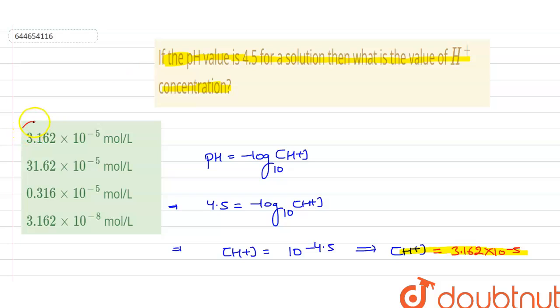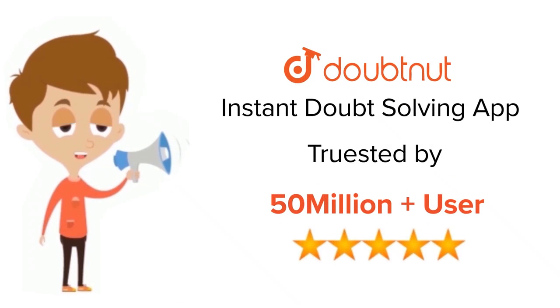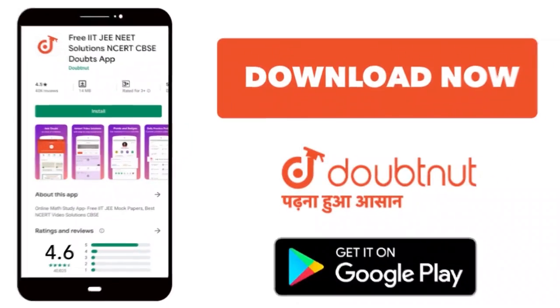from here we can say that it is exactly matching with our first option, so our first option is correct. I hope you got my point. Thank you. For class 6th to 12th up to IIT-JEE and NEET level, trusted by more than 5 crore students. Download Doubtnet app today.